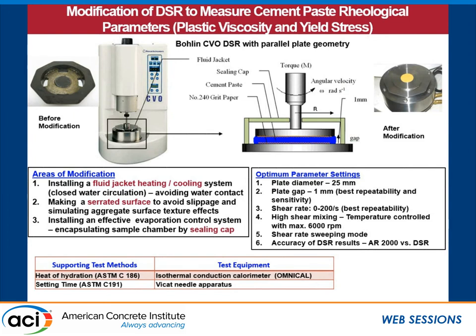We made these modifications: a sealing cap to minimize evaporation, a 240-grit paper introduced to give some texture to the plates to prevent slippage, and we totally changed the heating system to what is called a fluid jacket after modification, so water doesn't come in contact with the cement paste. We also did some preliminary investigation to determine the gap between the two plates, and found that a one millimeter gap is optimum for better repeatability. We selected a shear rate of 0 to 200 per second for best repeatability. We developed a high shear mixing procedure based on NIST and Portland Cement Association guidelines, used a shear rate sweeping mode, and used another rheometer to verify the DSR results. We also used a calorimeter and setting time as supporting tools.